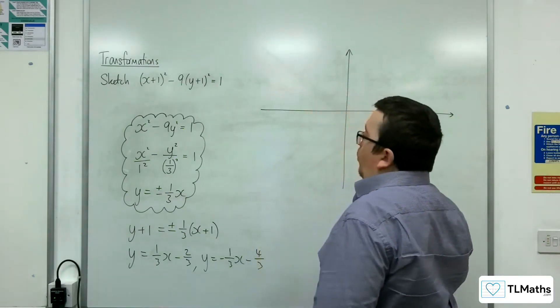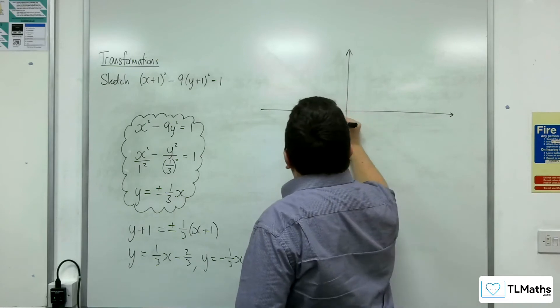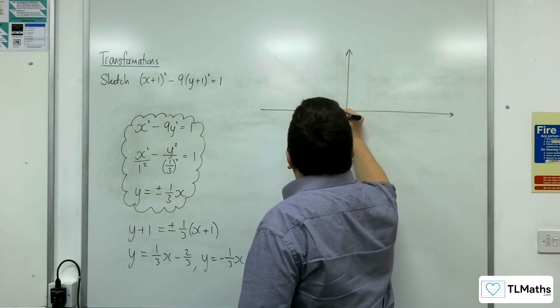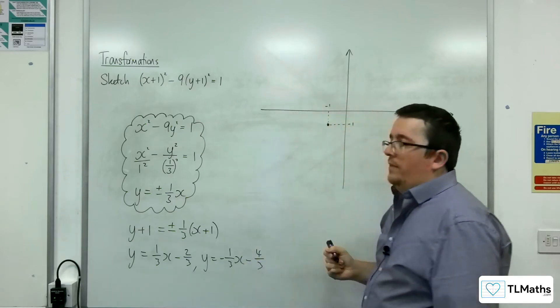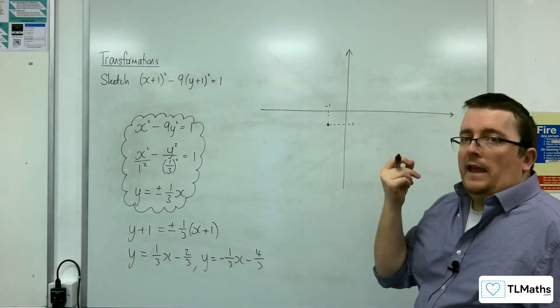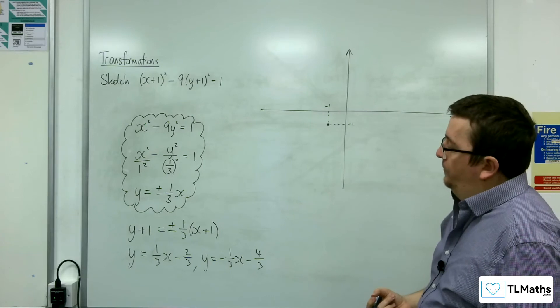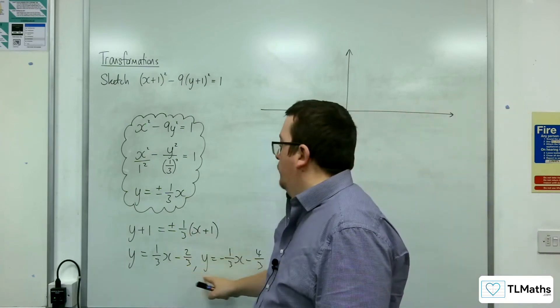So (-1, -1). That point there is the intersection of the two asymptotes. And they'll have these equations.